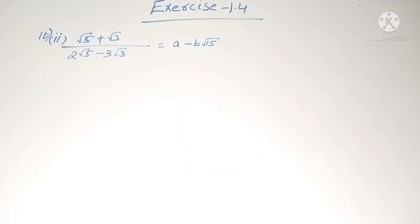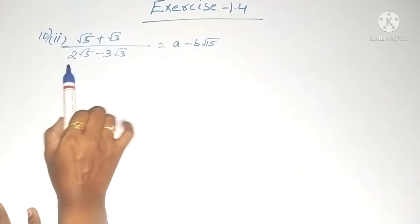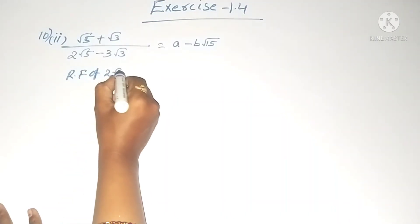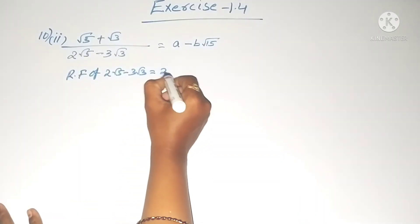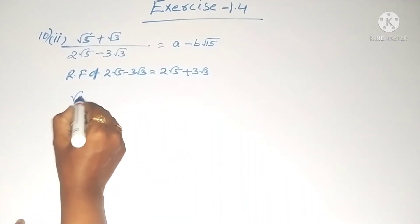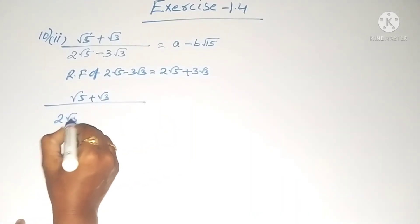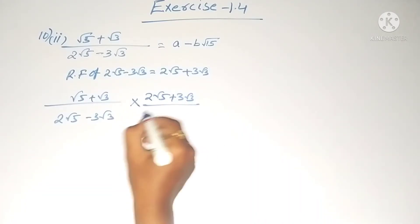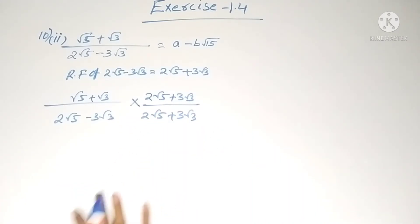Second problem: (√5 + √3) / (2√5 − 3√3) = a − b√15. We have to calculate a and b. In the denominator we have 2√5 − 3√3, so the rationalizing factor is 2√5 + 3√3. We multiply both numerator and denominator by 2√5 + 3√3.